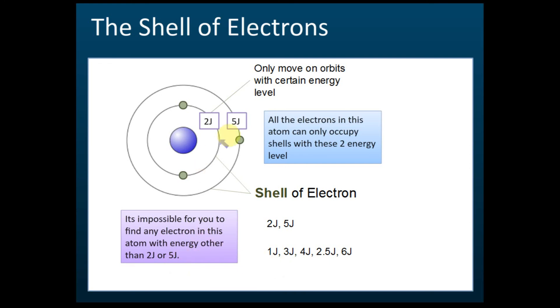It must be two joules or five joules only. That is called the energy levels, or the shells. That's what you need to know about the shells of electrons.